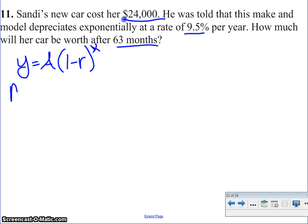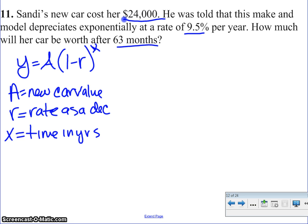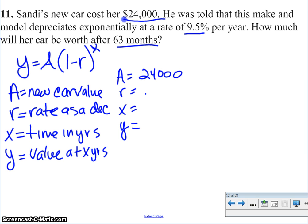Where a is the new car value, r is the rate as a decimal, x is time in years, and y is value at x years. So let's figure out what we know and solve for what we don't know. We're going to put a, r, x, y. Well, the new car cost was $24,000. It depreciates exponentially at 9.5%, which as a decimal is .095. And the time period is 63 months. So I need to divide that by 12 to get that to years, because remember x is time in years. And I'm looking at 5.25 as my time period.